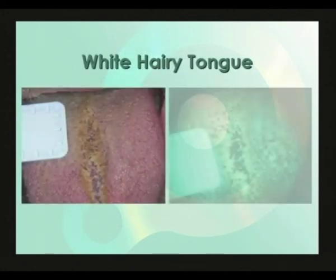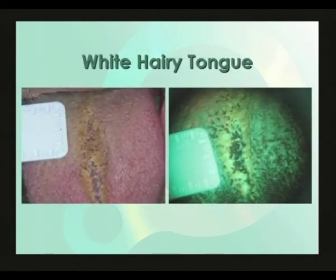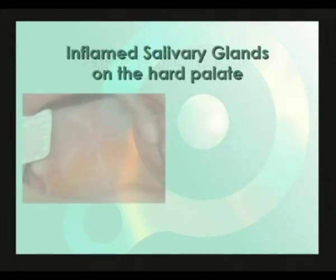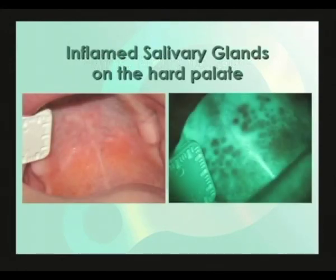Here is an example of so-called white hairy tongue — the extra-long keratinized filiform papilla show up very brightly under VELscope, as we would expect. These inflamed salivary glands on the hard palate of this patient show up as little dark patches under VELscope, as we would expect from our discussion on inflammation.